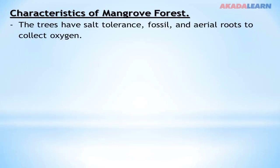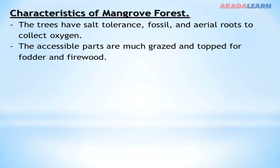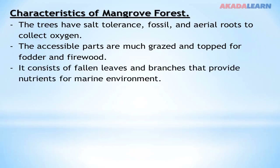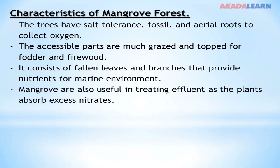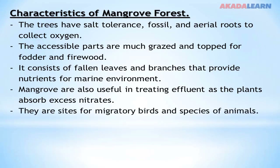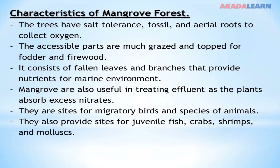Characteristics of mangrove forest: the trees have salt tolerance and aerial roots to collect oxygen. The accessible parts are most grazed and topped for fodder and firewood. It consists of fallen leaves and branches that provide nutrients for the marine environment. Mangroves are also useful in treating effluents as the plants absorb excess nitrates. They are a site for migratory birds and species of animals, and also provide site for juvenile fish, crabs, shrimps and mollusks.